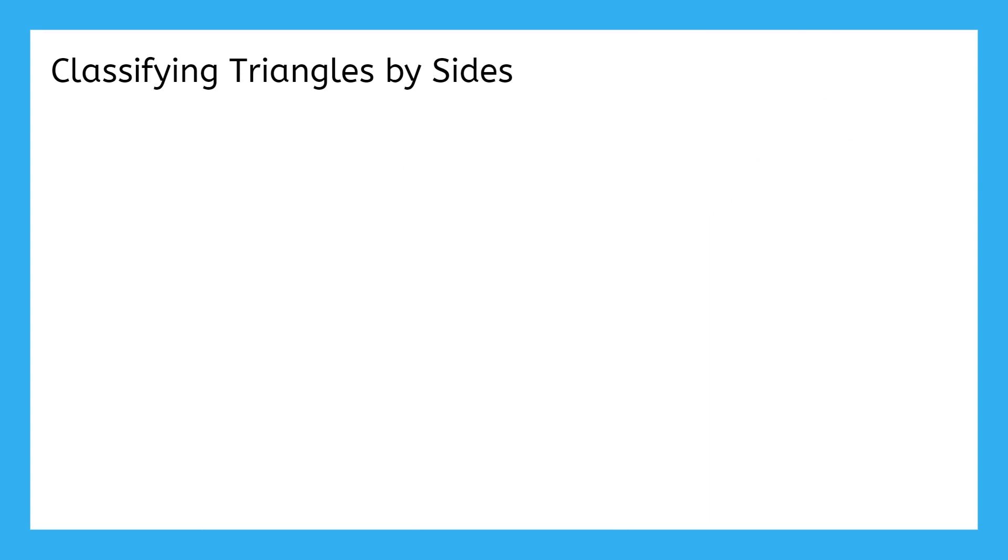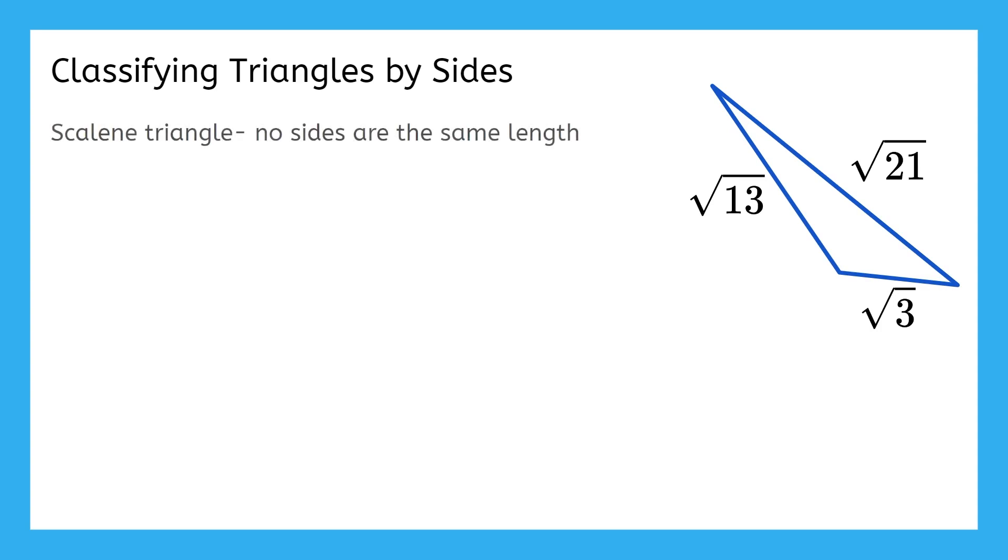When classifying triangles based on their side lengths, we can look for symbols or measurements that tell us if any of the sides are the same, or maybe even calculate some side lengths ourselves. In this example, we can clearly see that all the sides are different lengths. When the sides are all different lengths, we call this a scalene triangle.